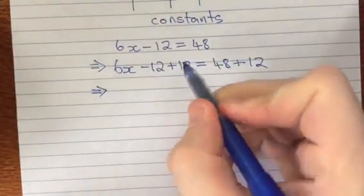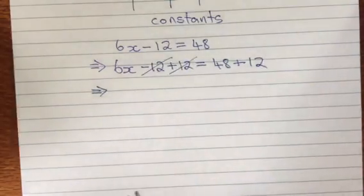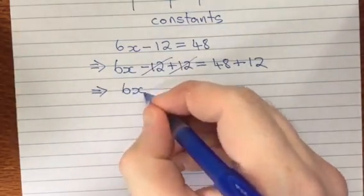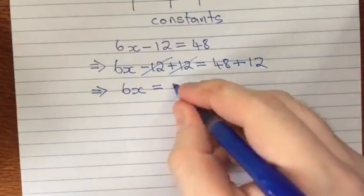So simplifying that down, remember minus 12 plus 12 they're just going to knock each other out and leave us with 0. So we've got 6x and 48 plus 12 on the right that's just 60.